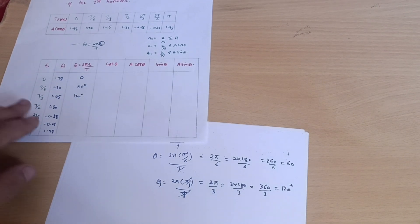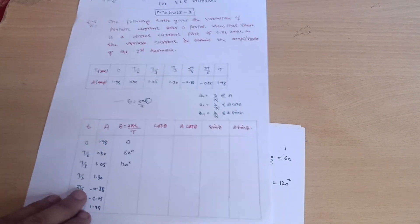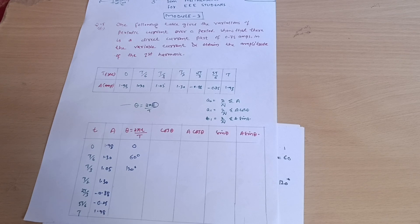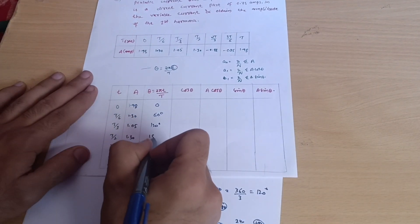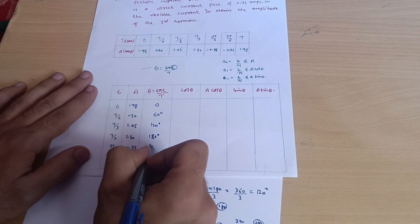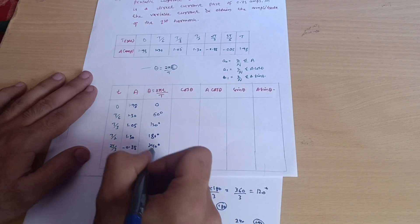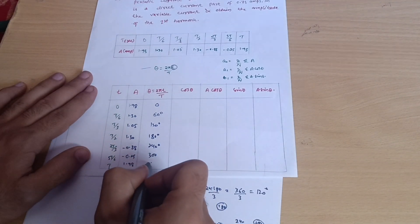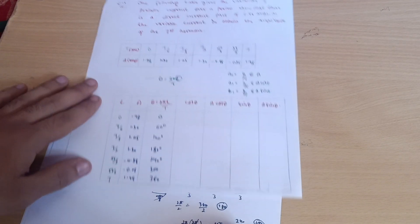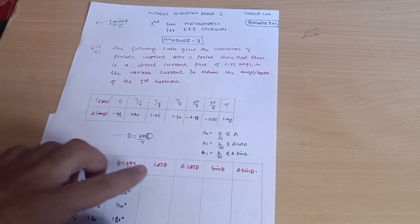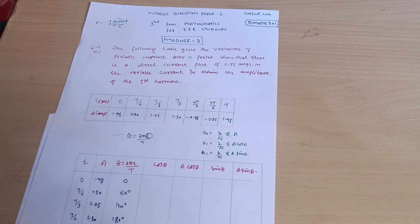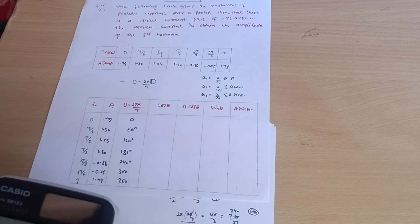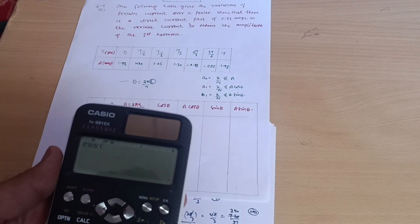Continuing directly, the remaining angles are 180°, 240°, 300°, and 360°. Now let's calculate the cos θ values for each of these angles.